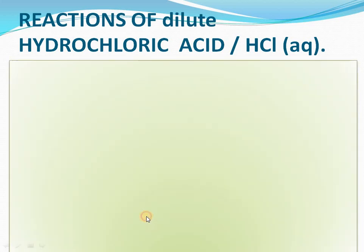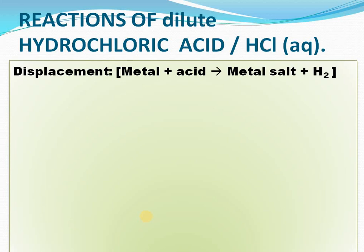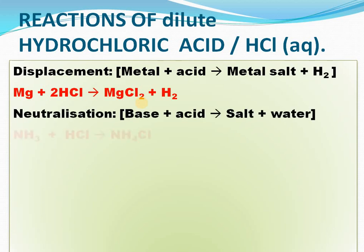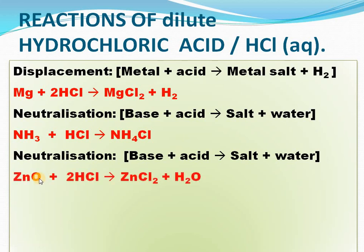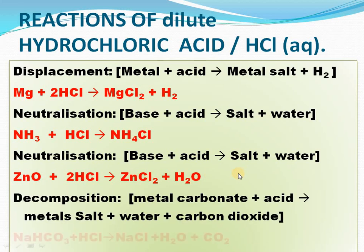Reactions of dilute hydrochloric acid in detail: metal + acid — for example, magnesium + HCl → MgCl₂ + hydrogen. Any element above hydrogen in the reactivity series can displace hydrogen. Neutralization: base + acid → salt + water; for example, zinc oxide (which is amphoteric, but acts as a base here) + HCl → zinc chloride + water. Decomposition of metal carbonates: any carbonate treated with acid gives salt, water, and carbon dioxide. For example, sodium carbonate (a component of Eno) when acid or lemon is added produces foam due to CO₂.